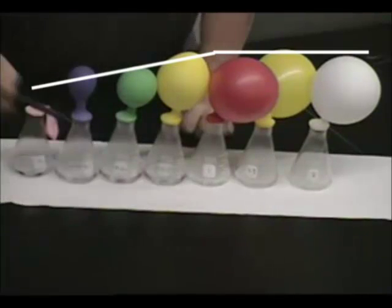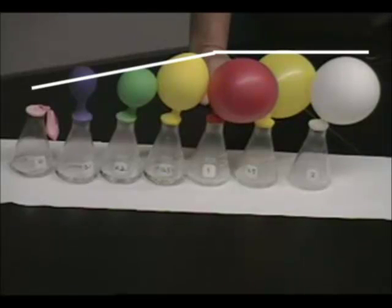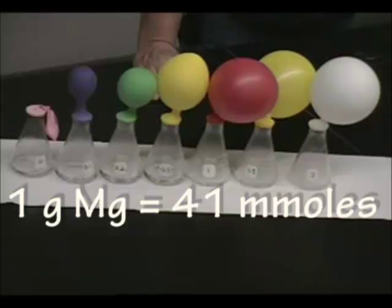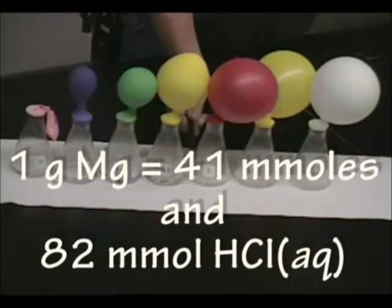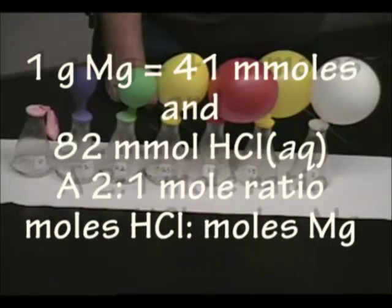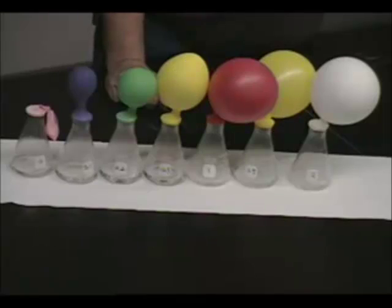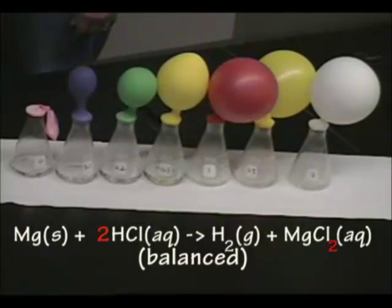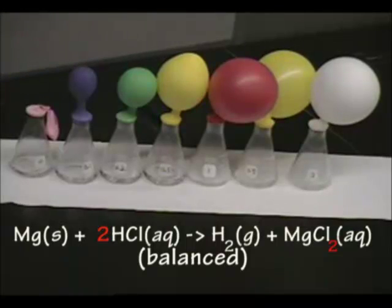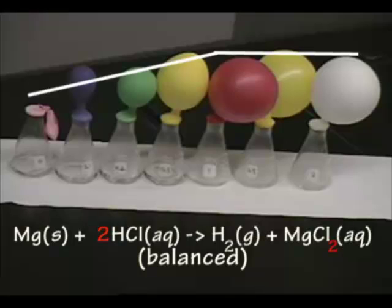Well, this is one gram, and one gram of magnesium is 41 millimoles of magnesium. And there's 82 millimoles of hydrochloric acid. Two to one. Right? So, there's twice as much hydrochloric acid as there is magnesium, and that has to be a two, doesn't it? So, there's the balanced equation. Two H, H2, two Cl, Cl2, one magnesium, one magnesium.